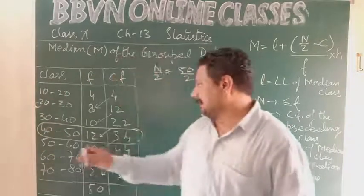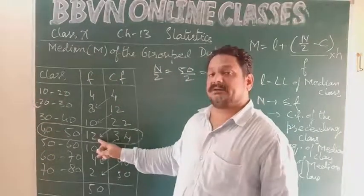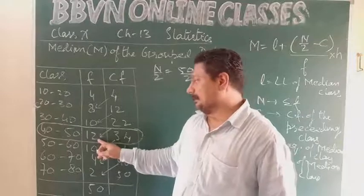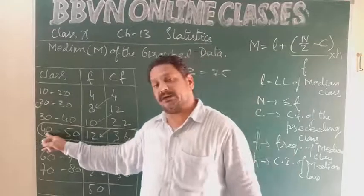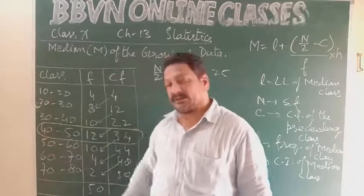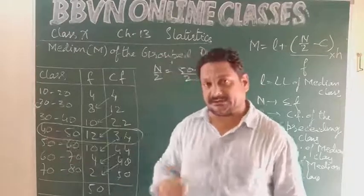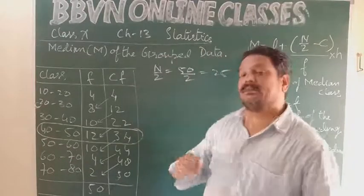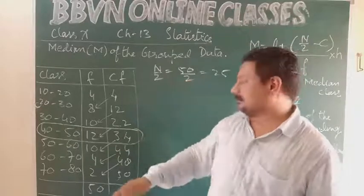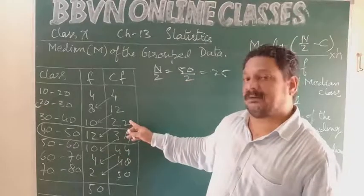If this is the median class, then 12 is F, frequency of median class. L will be 40, lower limit of the median class. H is the class interval 50 minus 40, that is 10. C is the cumulative frequency of preceding class, so C will be 22.